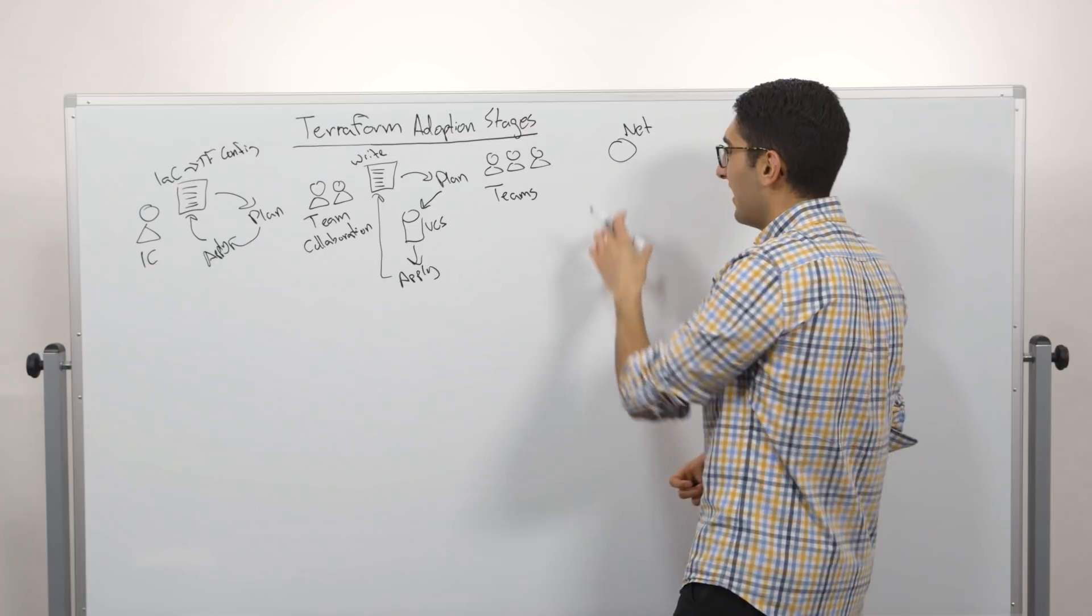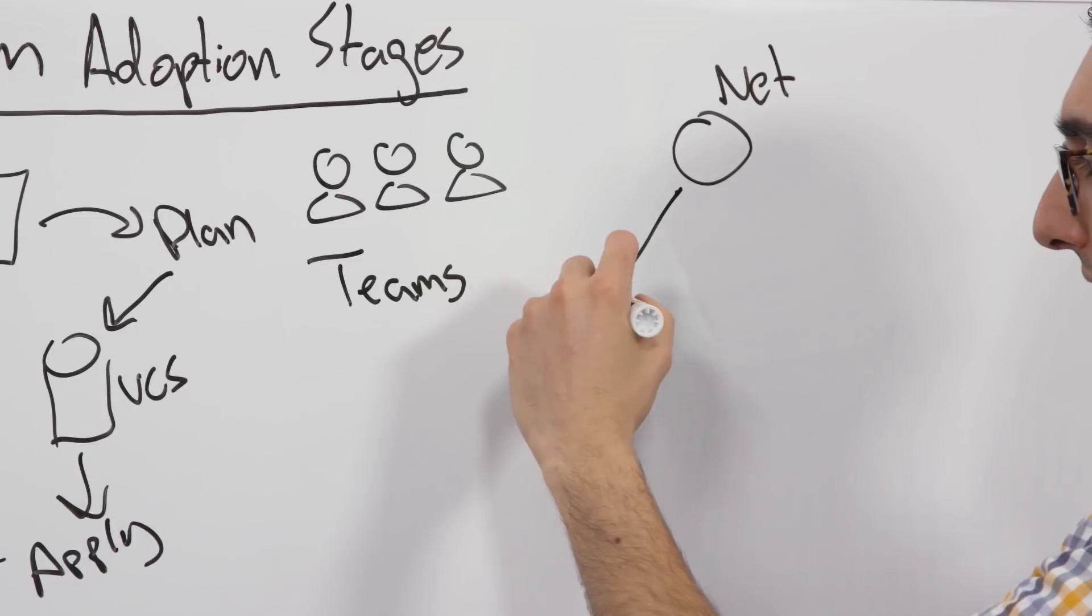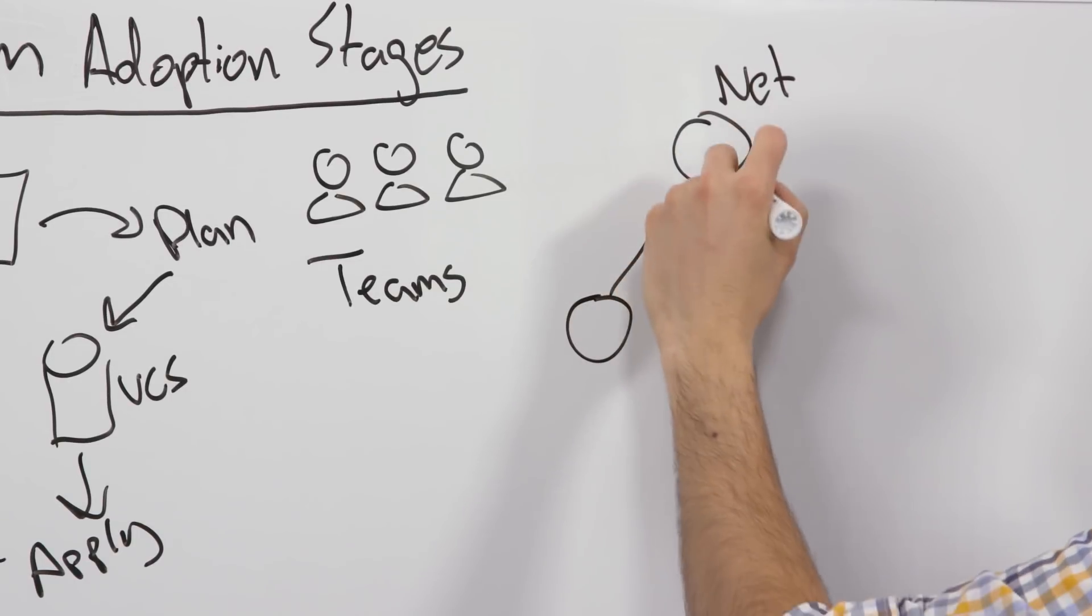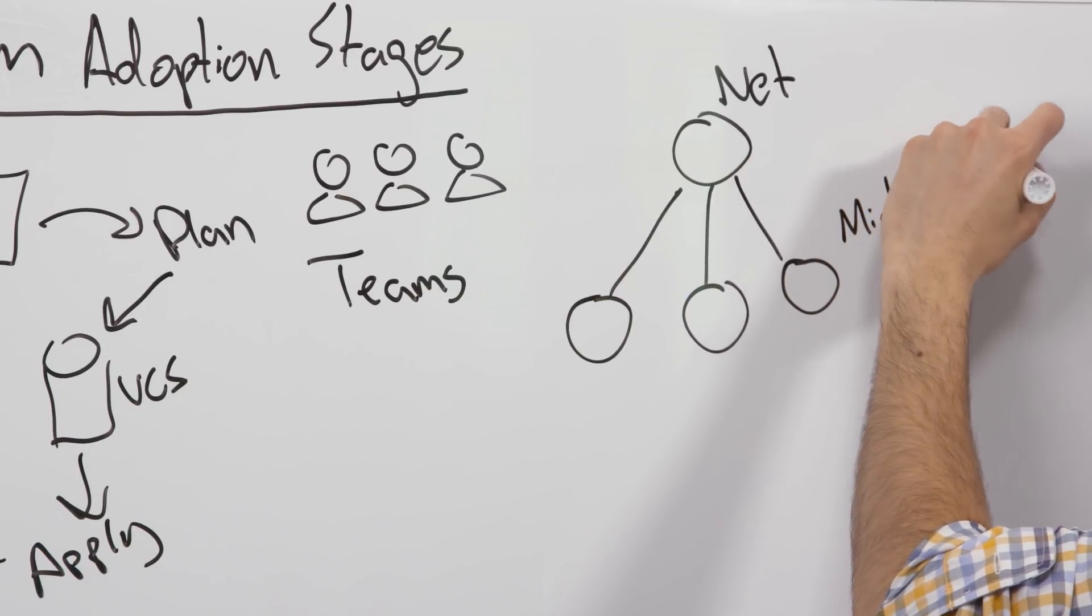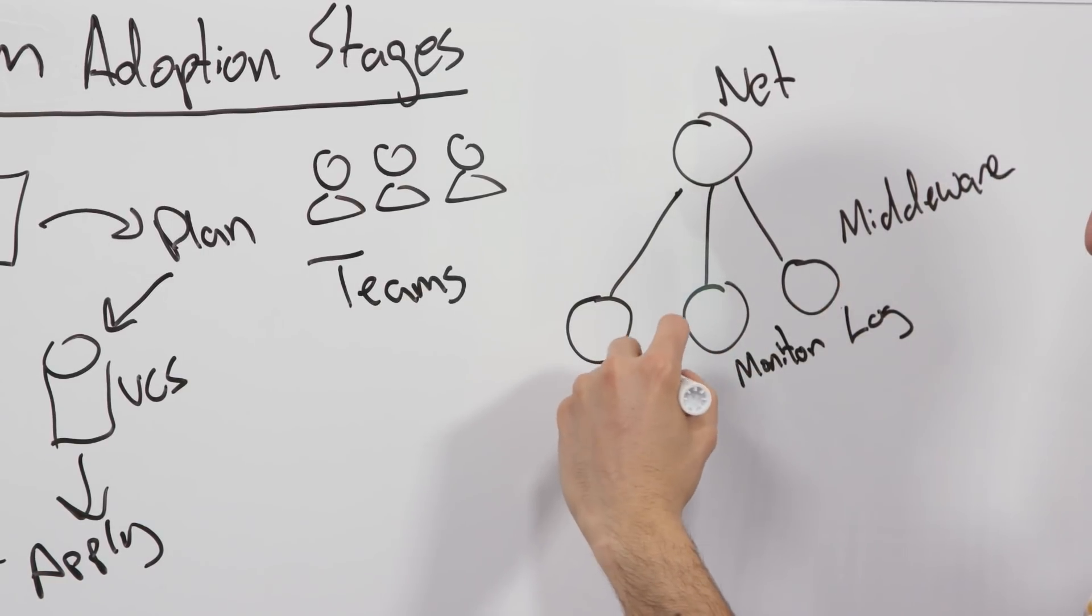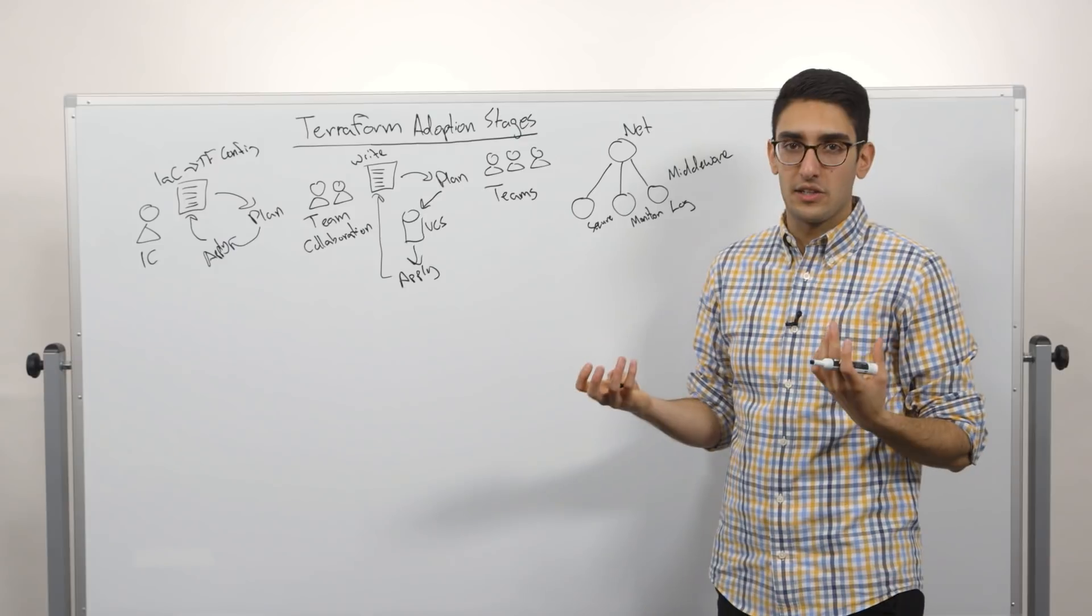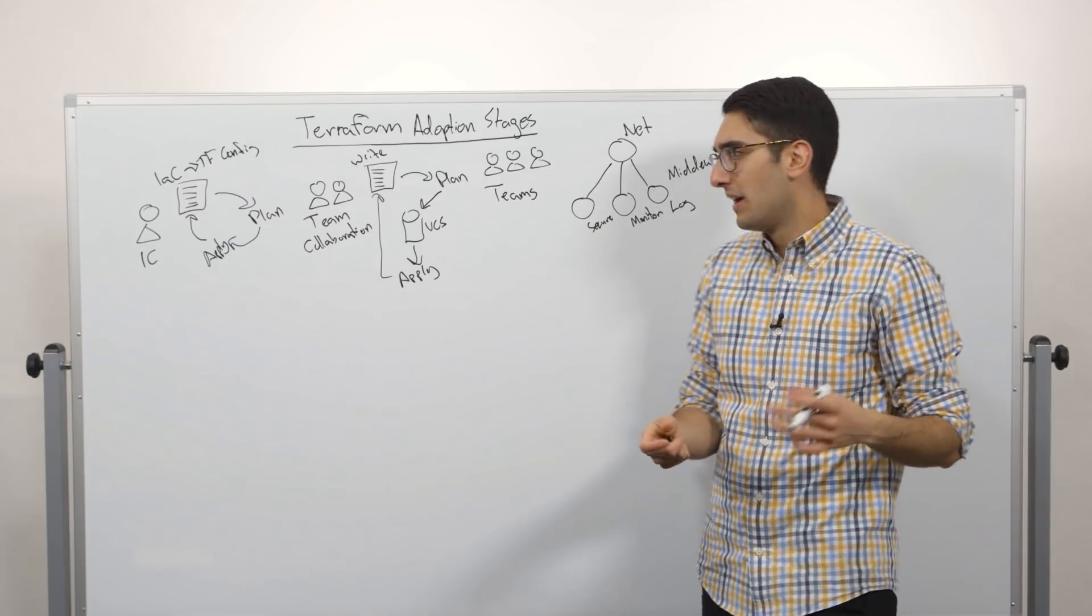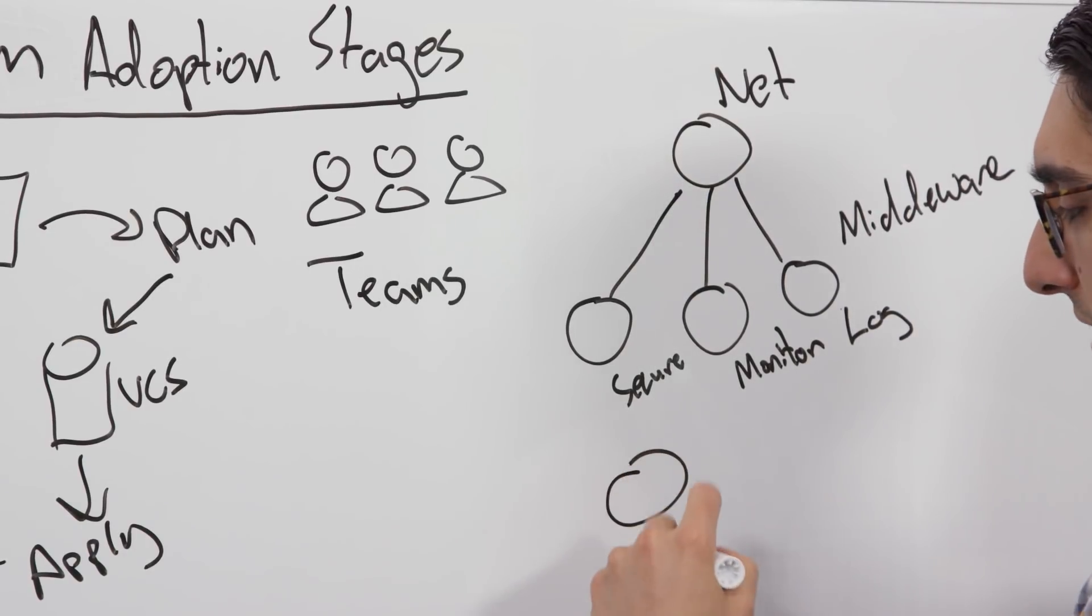Instead what we'd like to do is hierarchically decompose our infrastructure. We might have one team that focuses on the underlying network topology and cloud configuration. Then we might have a series of middleware. This might look at different things. We might have a central solution for logging, might have a central monitoring solution. Maybe we have security appliances that we share between applications. This is kind of the underpinning shared infrastructure that all of our applications are going to consume. You don't want every application team to reinvent how logging is done.